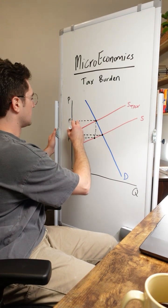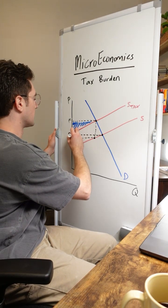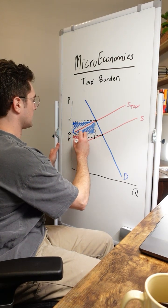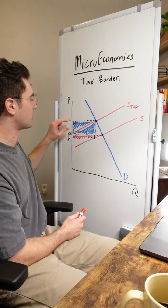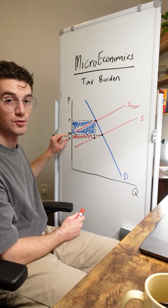In other words, this area right here is the new consumer burden and this area right here is the producer burden. This rectangle right here is consumer burden and this little rectangle right here is producer burden.